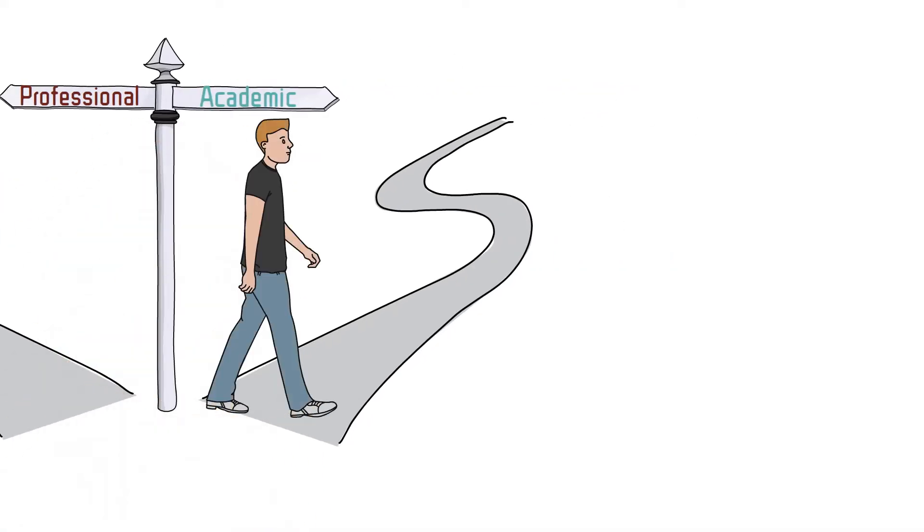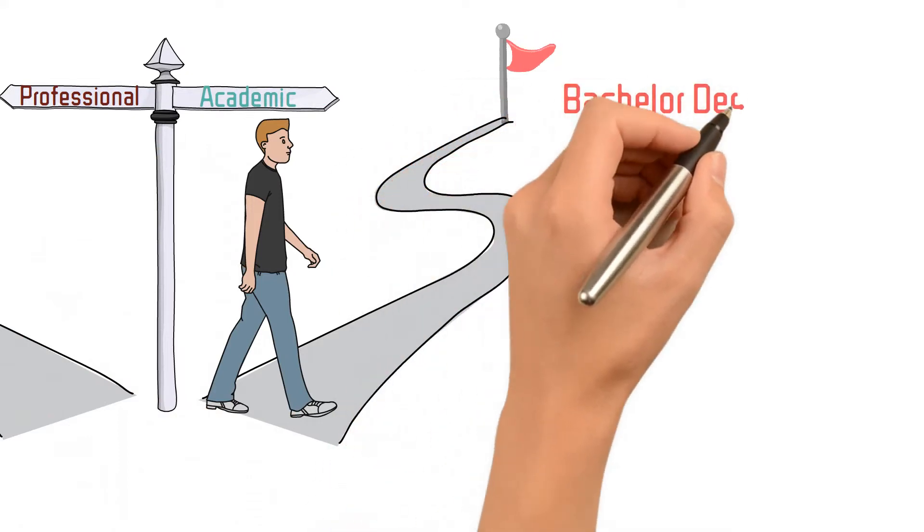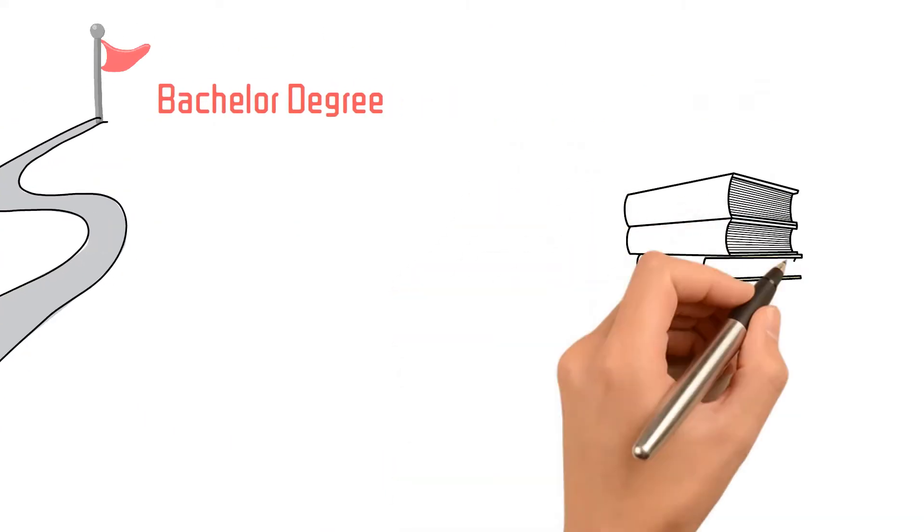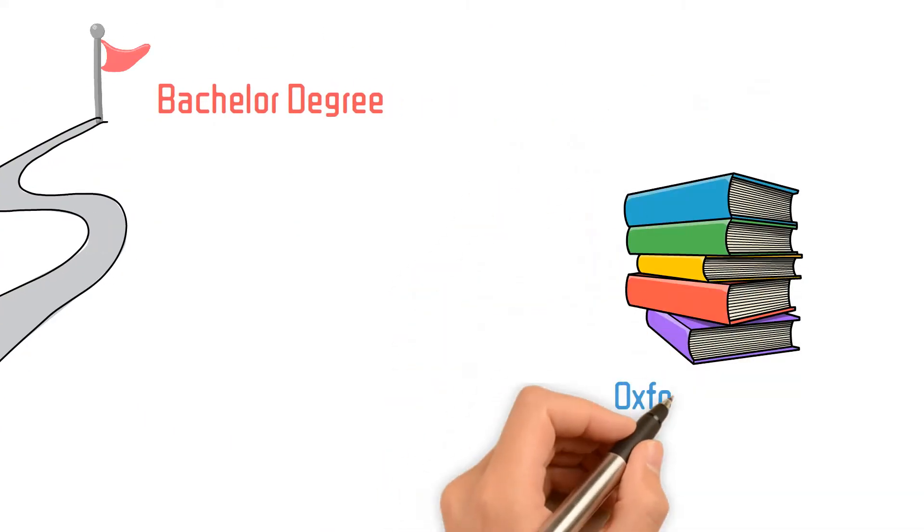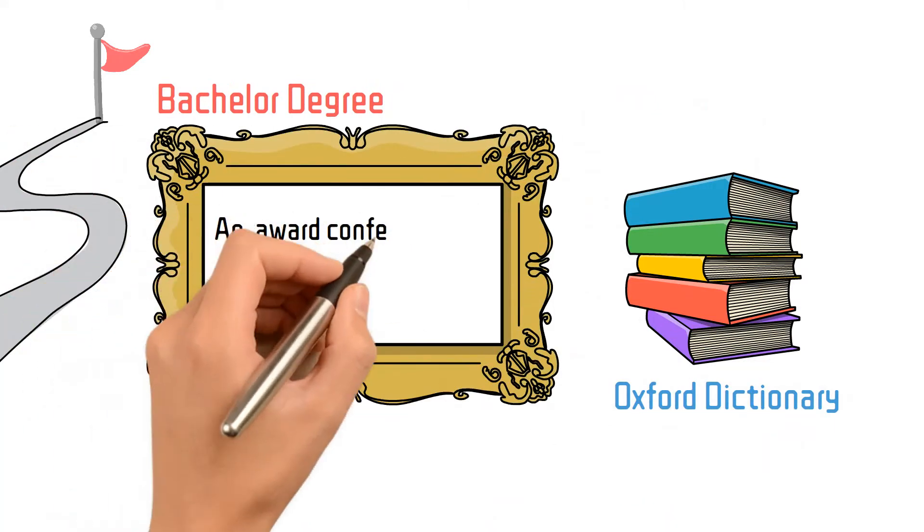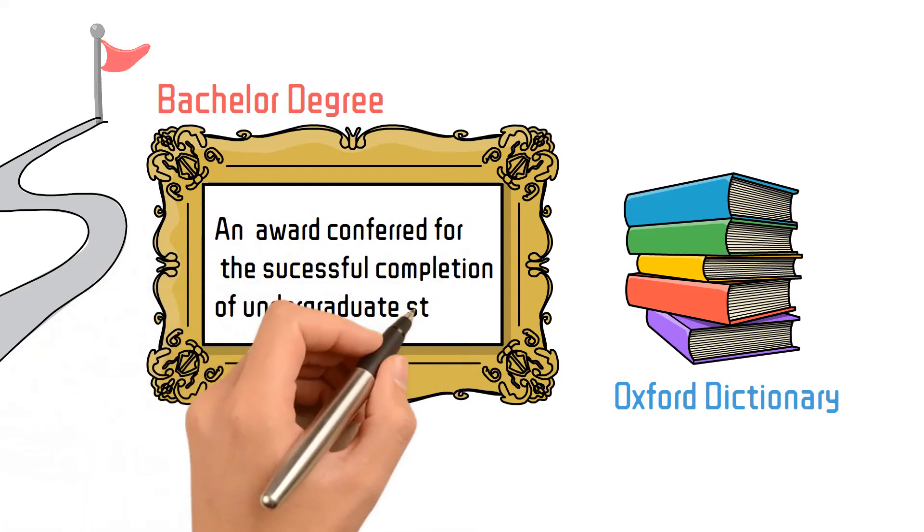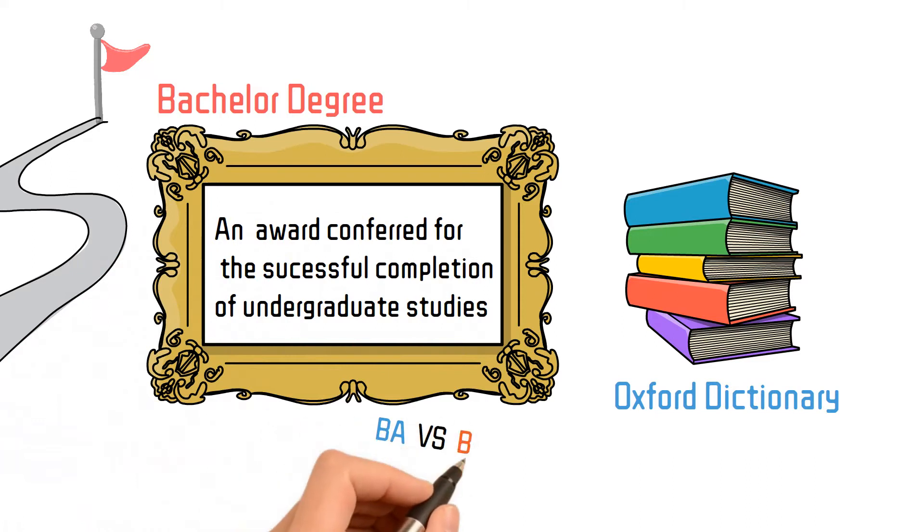So if you decide to continue with an academic path, then the next step will probably be a bachelor degree. So what is it? According to the Oxford dictionary, the bachelor degree is an award conferred for the successful completion of undergraduate studies. But still the question remains, what's the difference between BA, B.Eng, and B.Sc?